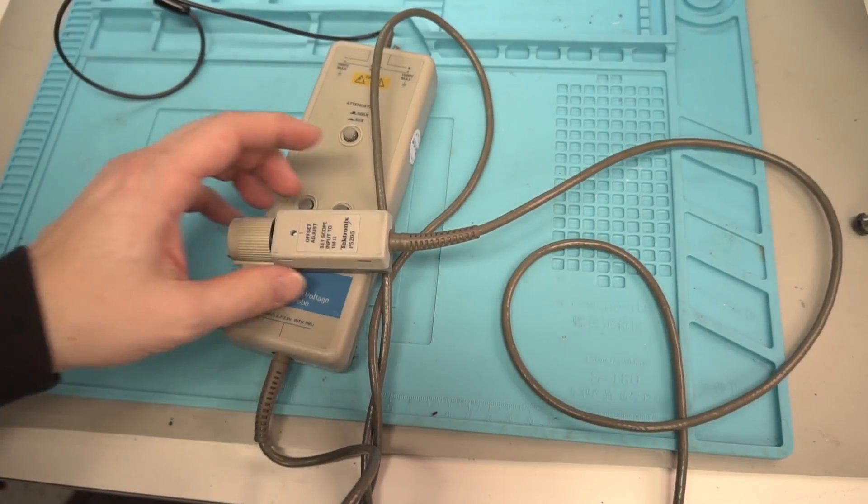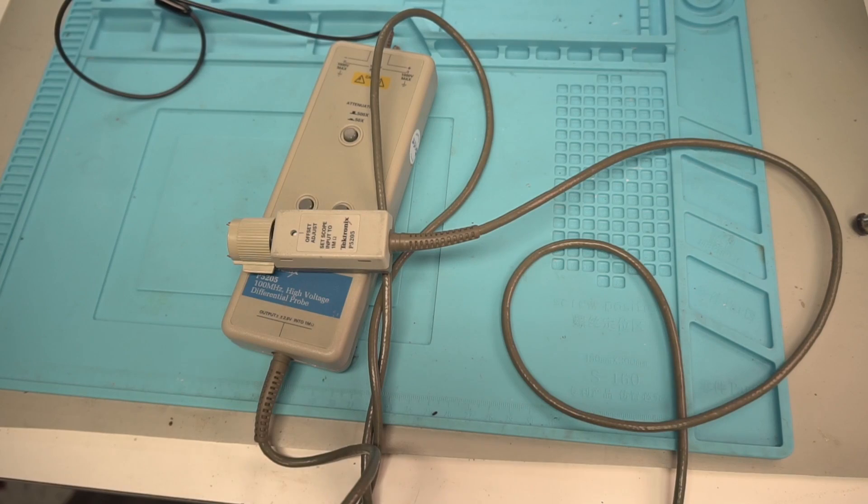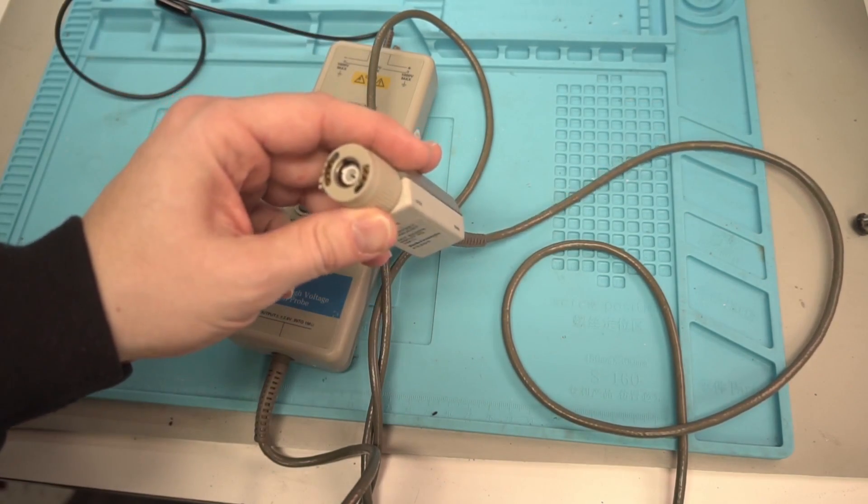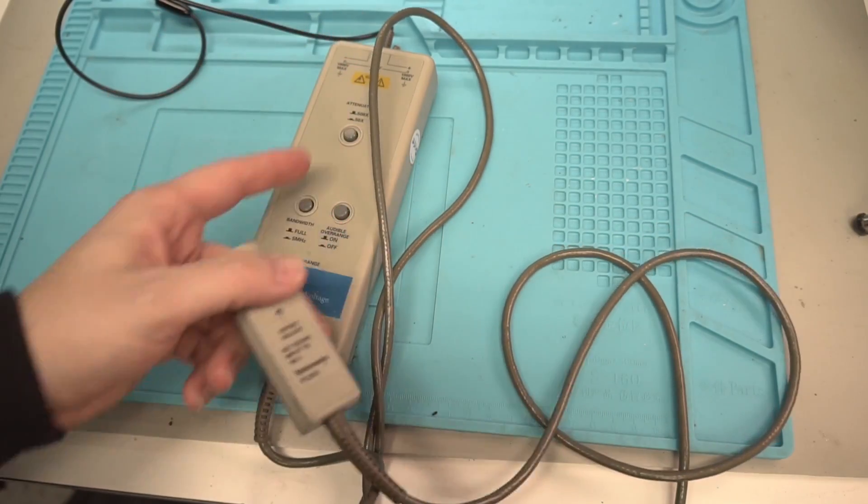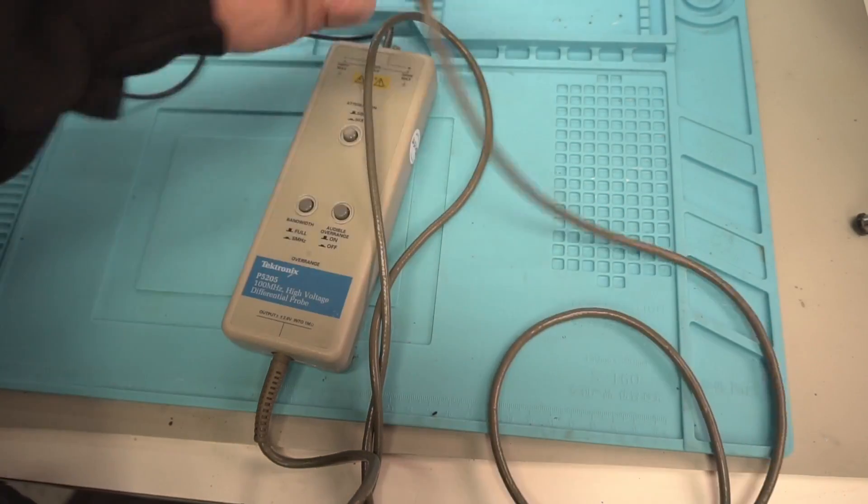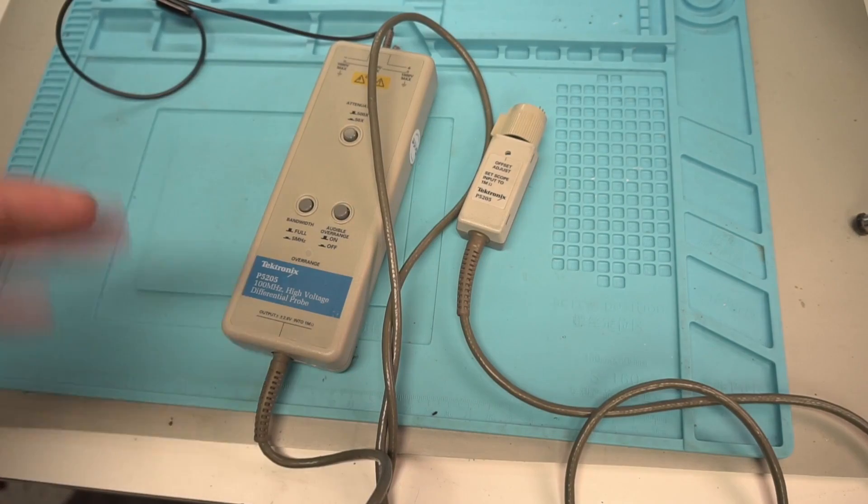They're meant for their scopes made in the late 90s early 2000s that have this little connector here that allows for the power and identification and these switches to help control the scope. So basically you just plug it and forget it on your scope. It takes care of all of the settings and everything.